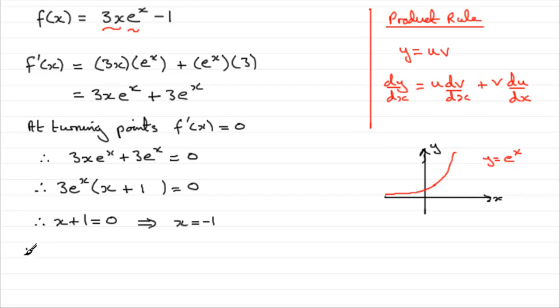So we would put, therefore, f of minus 1 equals, and we would need to do 3 times minus 1 times e to the power minus 1 minus 1.